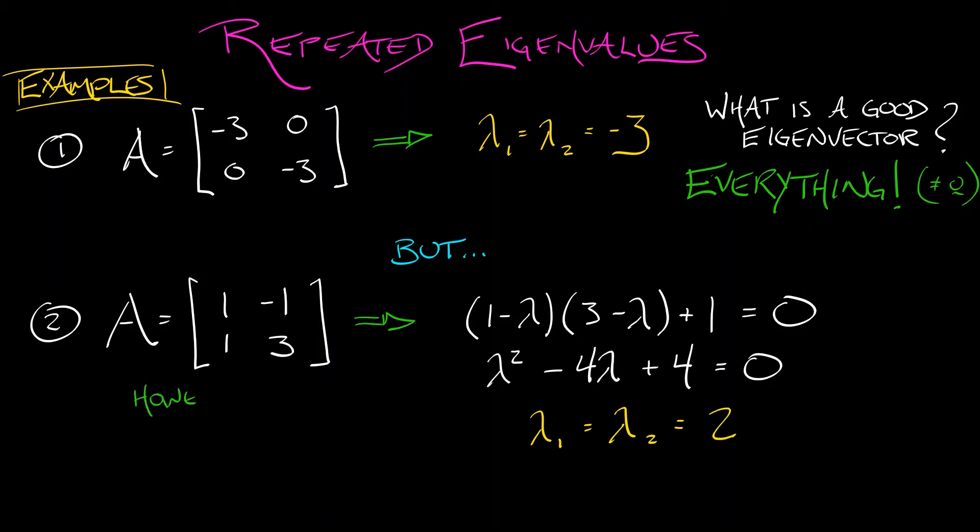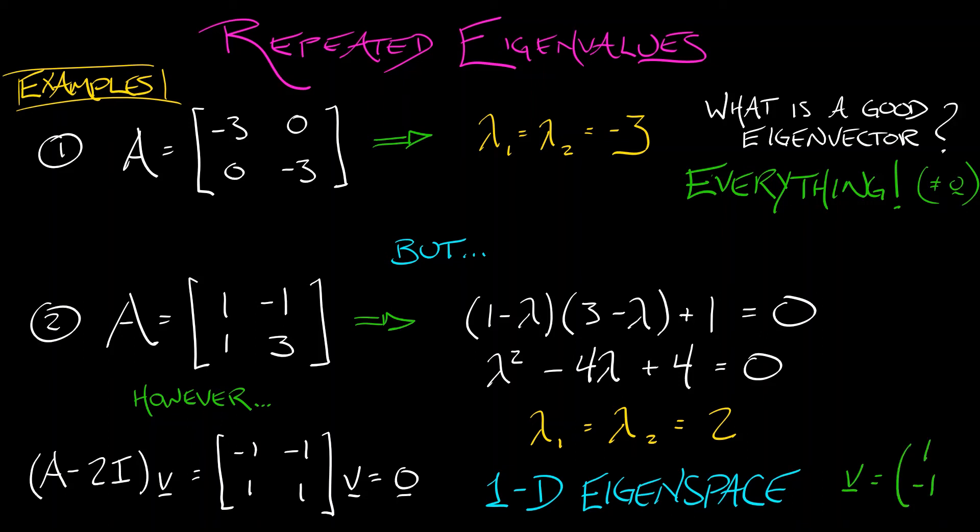To compute the eigenvectors, what do I do? Well, I take A minus 2I, and I hit a vector V with that, and that needs to be zero. That operator A - 2I is [-1, 1; -1, 1]. That matrix has a kernel that is one-dimensional. There is a one-dimensional eigenspace. I could choose V = (1, -1). That would work. There are other things that would work as well, but they're all non-zero multiples of (1, -1).